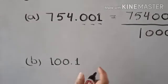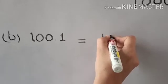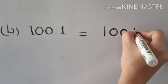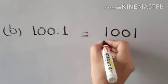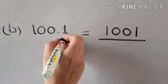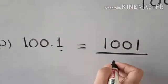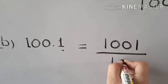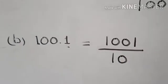The next part is 100.1. Write the given number without the decimal point. That is 1001. Now we have to write the denominator. There is one number after the decimal, so we write 10. The answer is 1001 upon 10.